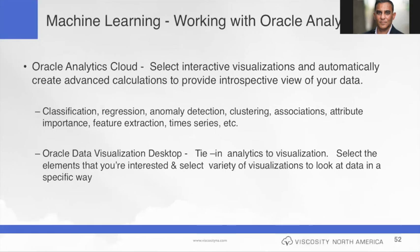Speaking of analytics, Oracle Analytics Cloud is a really good coupling with the notebooks and Zeppelin because it allows you to do selective interactive visualization and automatically create advanced calculations. Things like classification, regression testing, anomaly detection, disparity, clustering, and association — these are all things you can do with the Analytics Cloud. Coupled with data visualization, you tie in analytics to visualization, select the elements you want, choose from a variety of visualization types, and decide how you want to look at the data. This is a really good way to start with machine learning for business analytics.